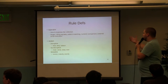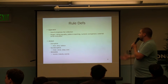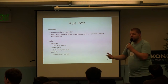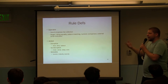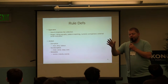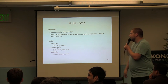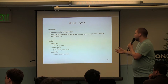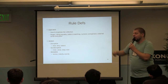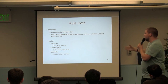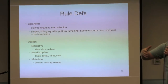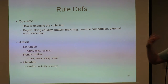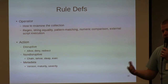Next is the operator — what do we want to do based on the collection? We can check against a regex, look for string equality, do pattern matching, or numeric comparison. And then the final part is what do we want to do: deny the request, allow it, or send a 301 redirect. There are metadata rules to define rule maturity and severity, and non-disruptive rules to build larger complex chains, set persistent storage variables, and things like that.